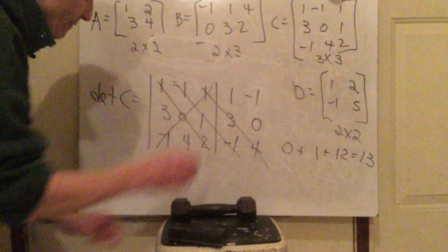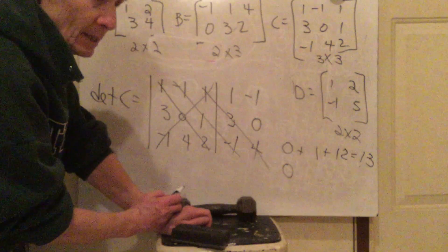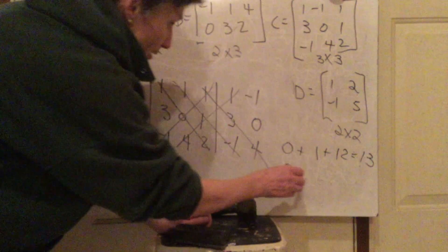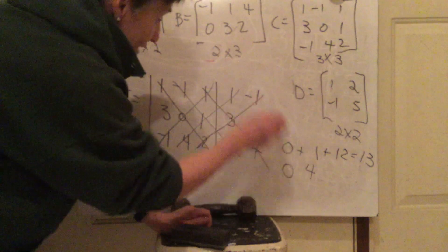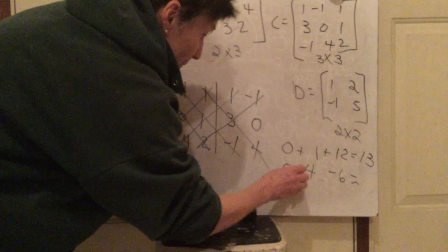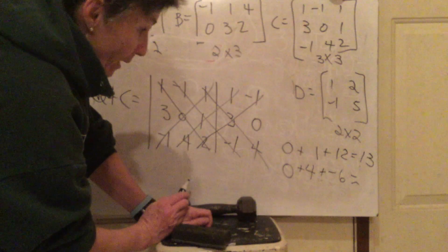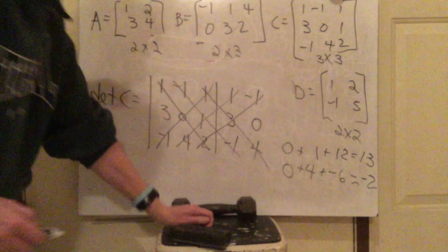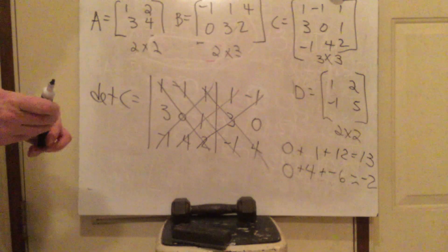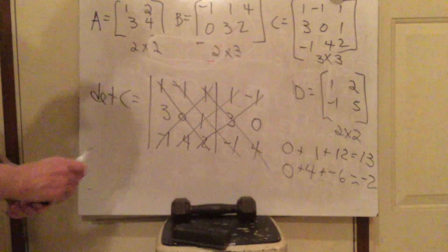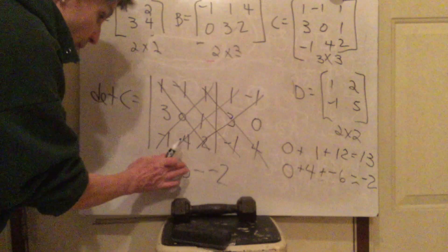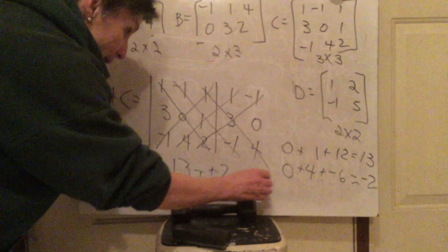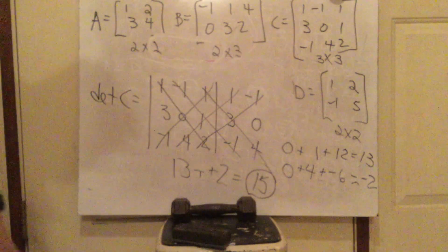You need to stay organized for this — messy work won't work here. After the two diagonal sums, you subtract: first sum minus second sum. So 13 minus negative 2 equals 15. That is the determinant of C. Practice this on video — go back and re-watch, re-do. You need to practice until these steps are sorted out. There's a lot to remember but it gets easier.